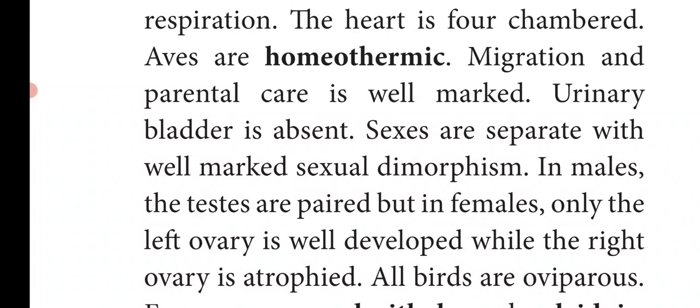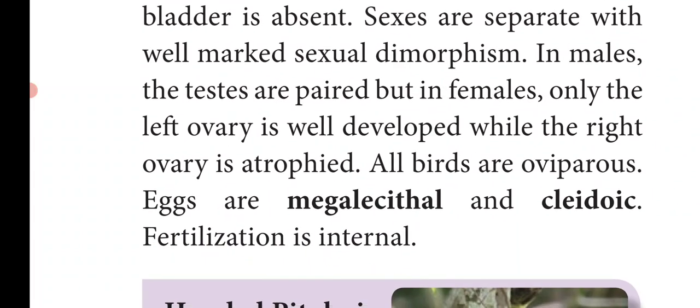Sexes are separate with well-marked sexual dimorphism — that is, separate male and female — and we can identify which is male and which is female based on external features. In males, the testes are paired, but in female birds only the left ovary develops; the right ovary is atrophied, meaning non-functional.